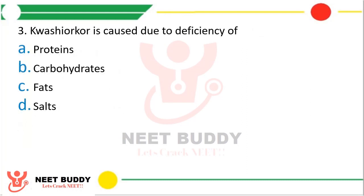Question number 3. Kwashiorkor is caused due to deficiency of: option A. Proteins, option B. Carbohydrates, option C. Fats, option D. Salts. The correct answer is option A, proteins. There is a group of diseases known as protein energy malnutrition, with two important diseases: Kwashiorkor and Marasmus. Protein deficiency leads to Kwashiorkor.